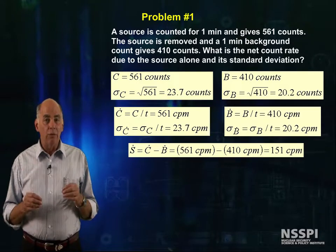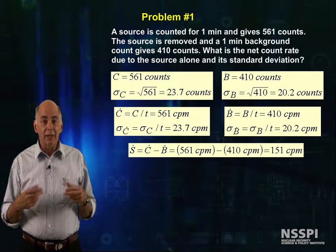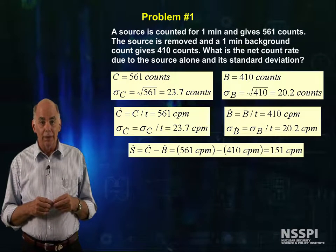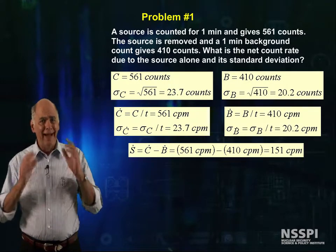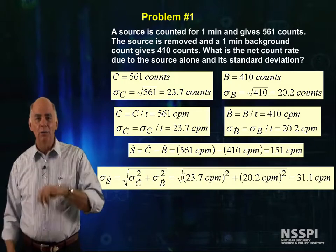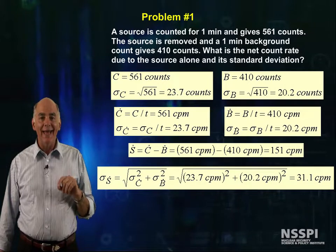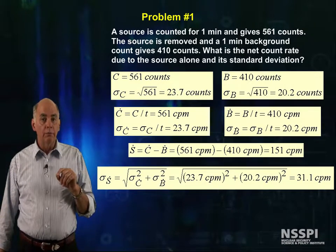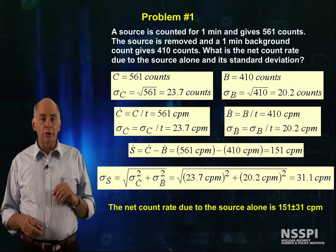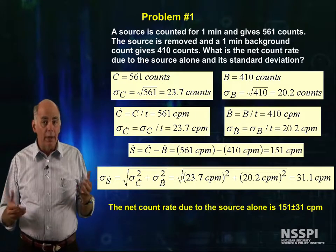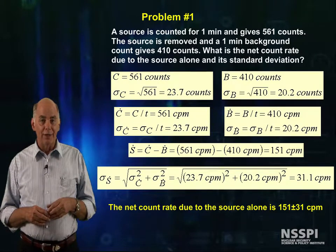To get the net count rate, or the count rate from the source alone, we have to subtract the background count rate from the gross count rate, and we get 151 counts per minute. How do we find the error in this subtraction? We use the error propagation formula, and we find that the error in the net count rate is 31.1 counts per minute. So the net count rate is 151 counts per minute with a standard deviation of 31 counts per minute.